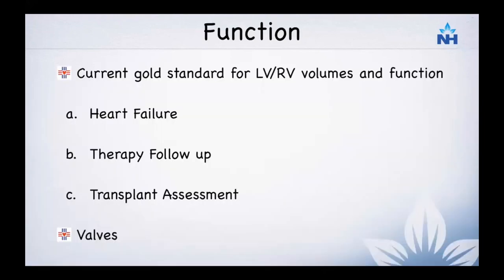Cardiac MR is the gold standard for LV and RV volume and functional assessment. There are no issues with poor acoustic windows, inability to see the RV free wall, or dilated hearts where chambers may not be fully visible on echocardiography. Cardiac MR functional assessment has become the standard method for determining heart failure, therapy follow-up, and transplant assessment — both pre- and post-transplant — with LV and RV ejection fraction assessed by cardiac MR volumetrics serving as standards for evaluating pharmacological efficacy.